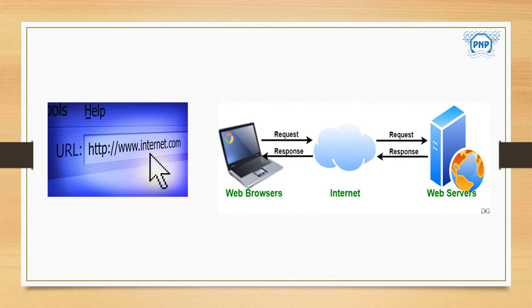The web browser displays the requested page on your computer. On clicking a hyperlink on the home page, the web browser uses the address associated with the hyperlink to connect to the web server and request the linked web page. The web server sends the requested web page to the web browser, which in turn displays it on the computer.